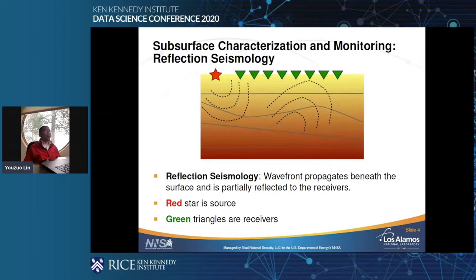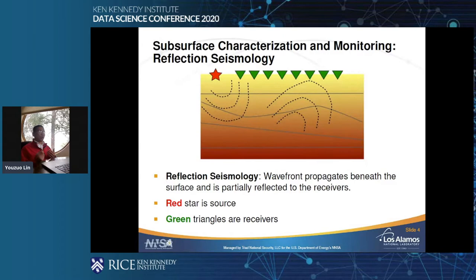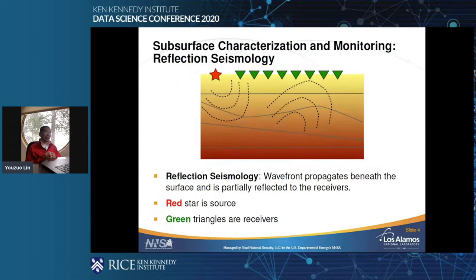For those who have never seen any subsurface problems, this is an exaggerated cartoon showing what subsurface characterization looks like — we're using refraction seismic as the example. The source, which could be a TNT dynamite or a truck vibrator hitting the ground, sends out a seismic wave that propagates through the subsurface, bounces back, and is eventually picked up by receivers denoted by the upside-down green triangles. Once the data is collected, this is where our job gets started.